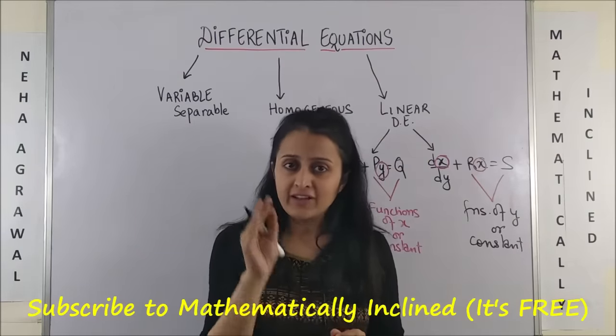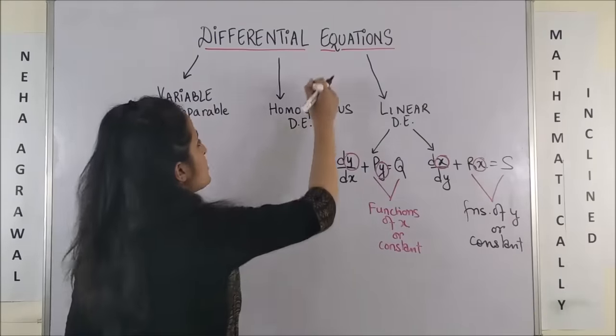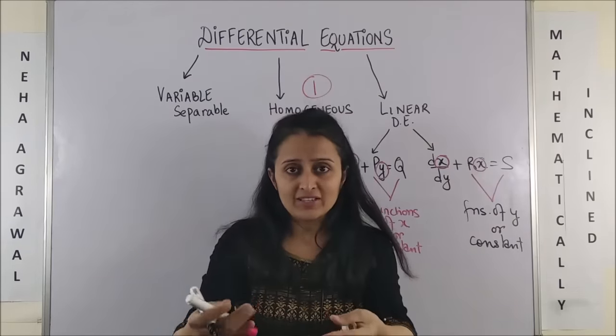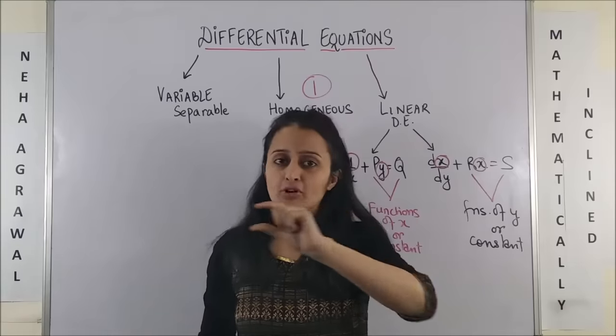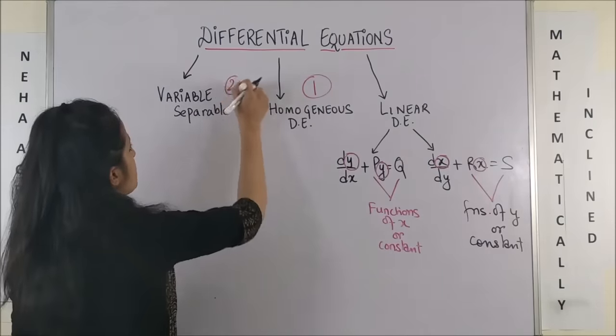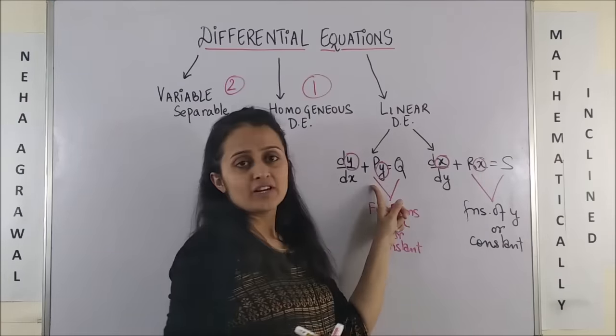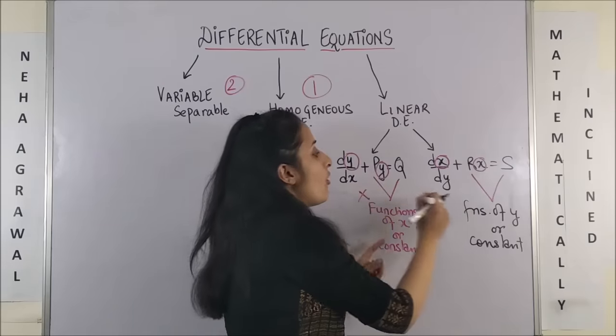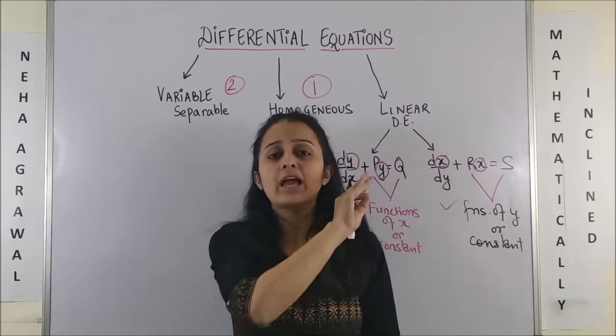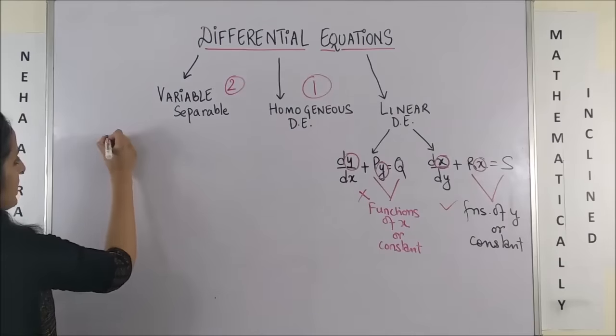Now, the procedure or the trick to identify the type of differential equation is always, always and always: First, check whether it is homogeneous. It is very simple. If each and every term is of uniform degree. If it is not, then secondly move to variable separable. Can you separate them out? If it is not both, then move to this form first.